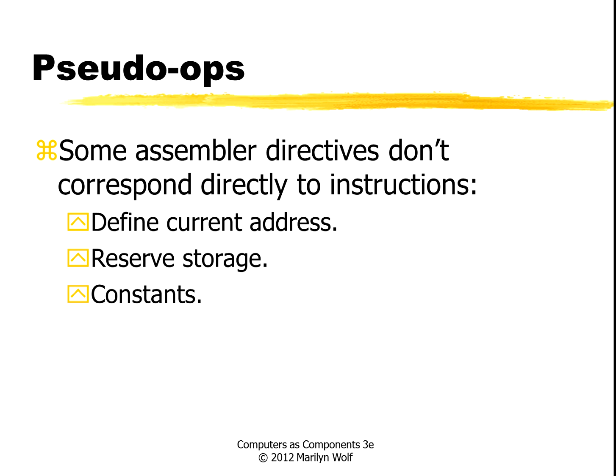The exceptions to the one-instruction-per-line rule are usually called pseudo-ops. These are things that help us control the assembly process — for instance, defining the current address, reserving storage, defining constants, and things like that.